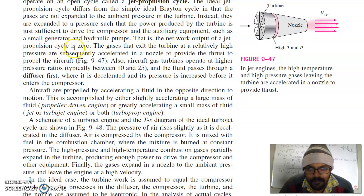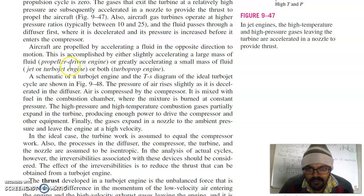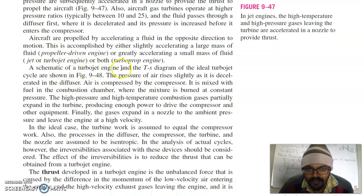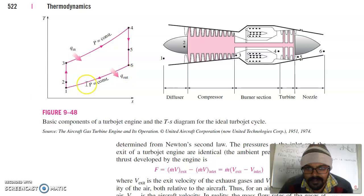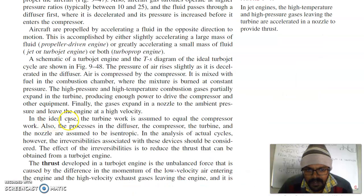The net output of a jet propulsion cycle is zero. The gases that exit the turbine at a relatively high pressure are subsequently accelerated in a nozzle to provide a thrust to propel the aircraft. Also, aircraft gas turbines operate at higher pressures. The schematic of turbojet engine and T-S diagram of ideal turbojet cycle is also shown in the diagram. This is your typical TS diagram. In the ideal case the turbine work is assumed to equal the compressor. The processes in the diffuser, the compressor, the turbine and nozzle are assumed to be isentropic in the analysis of ideal cycles. However, the irreversibilities associated with these devices should be considered.